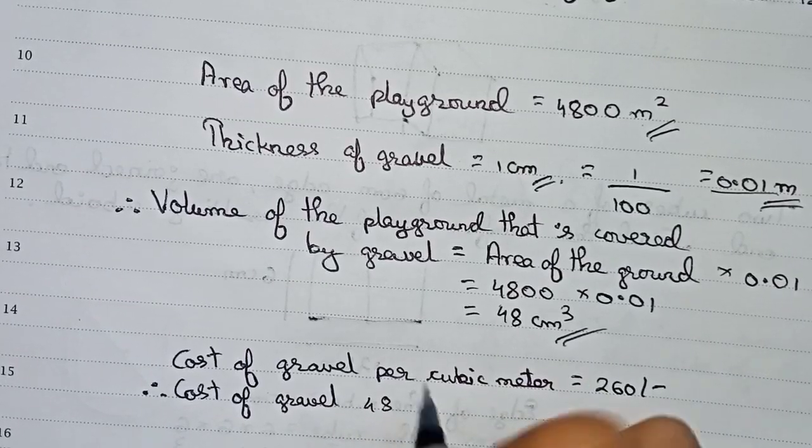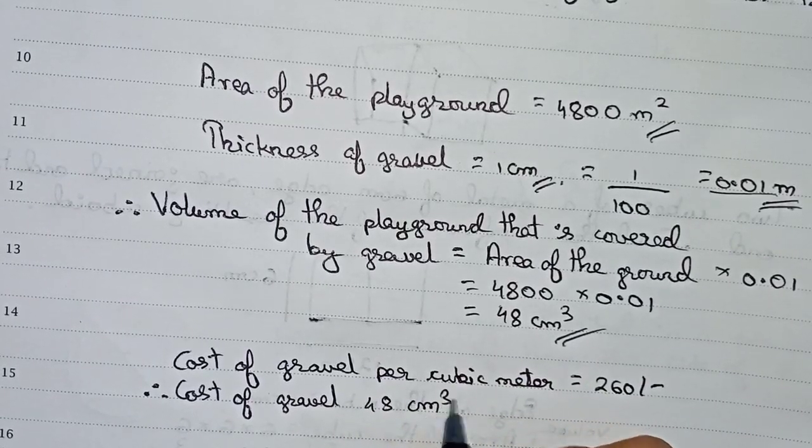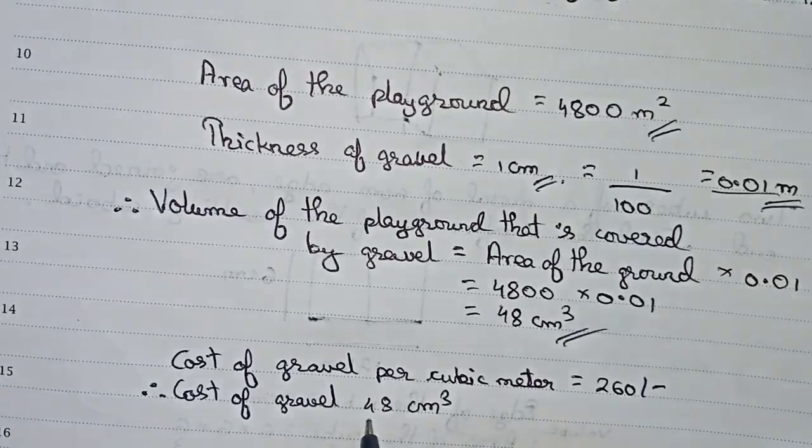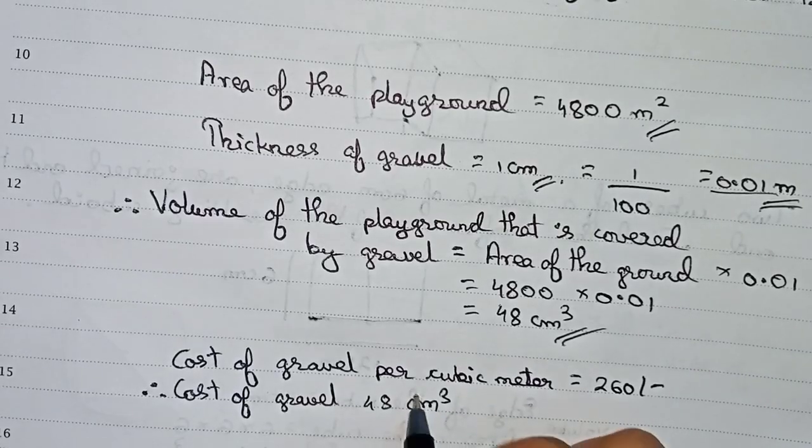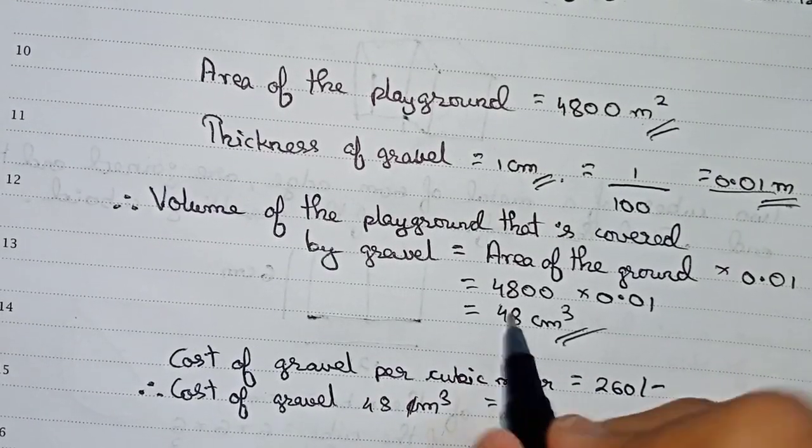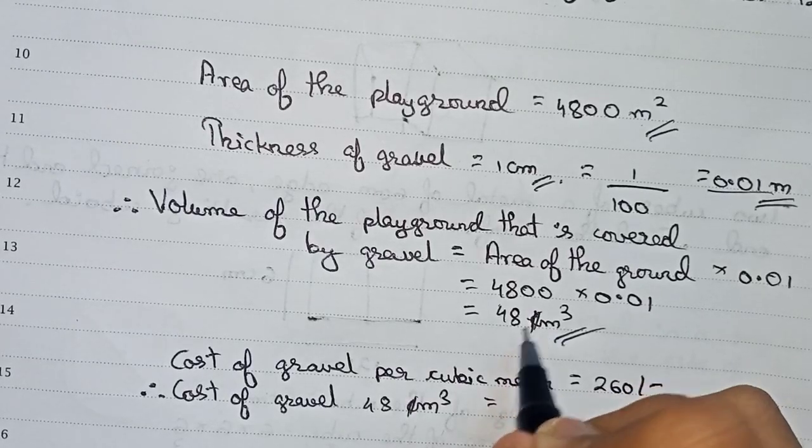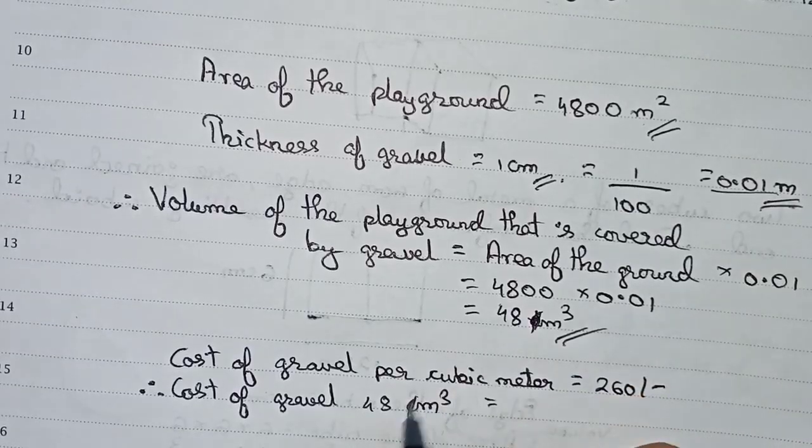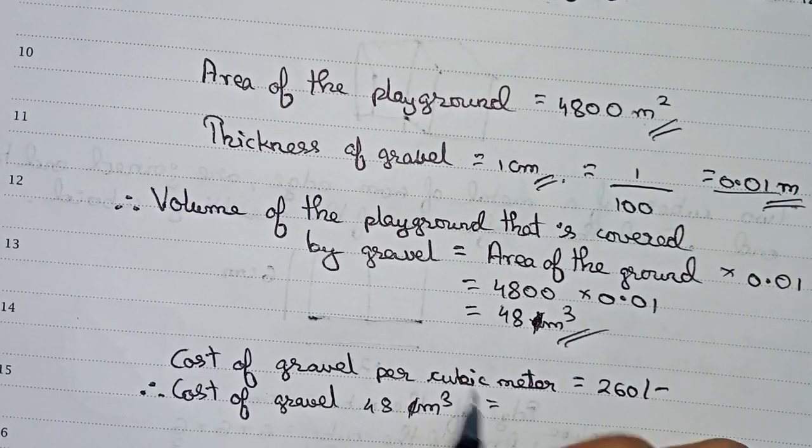For 48 meter cube... Sorry guys, I made a mistake earlier - it will be 48 meter cube, not centimeter cube. So cost of gravel for 48 meter cube will be 48 times 260.